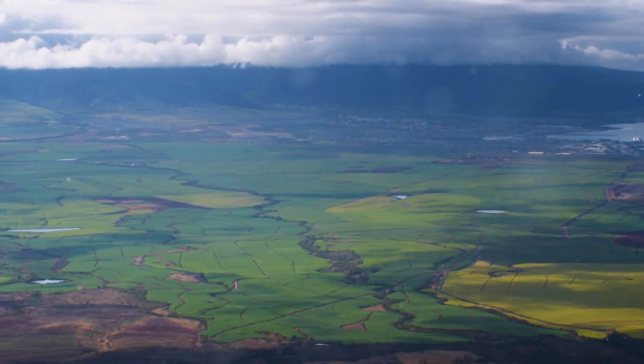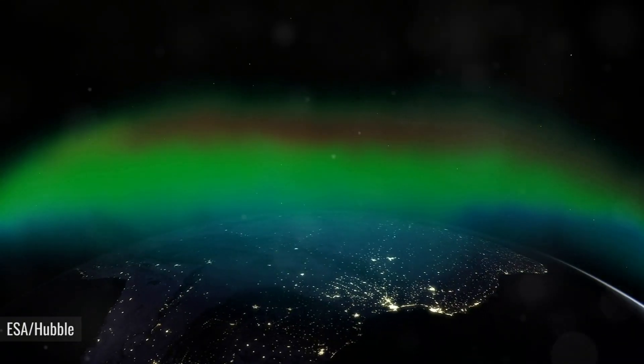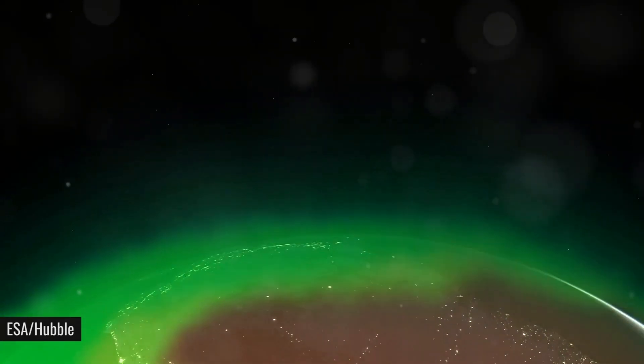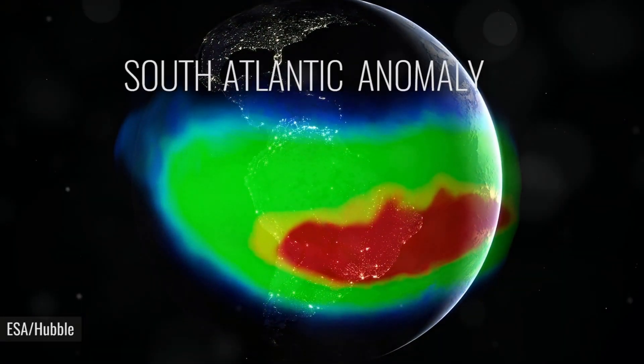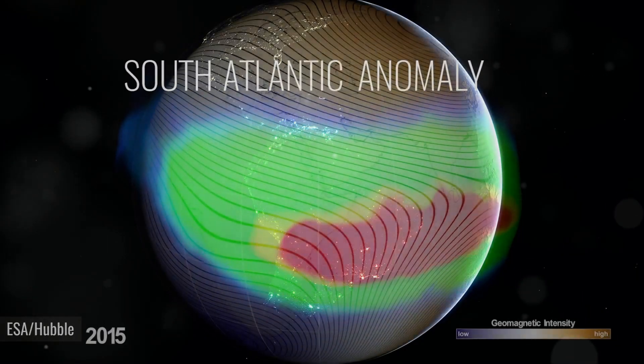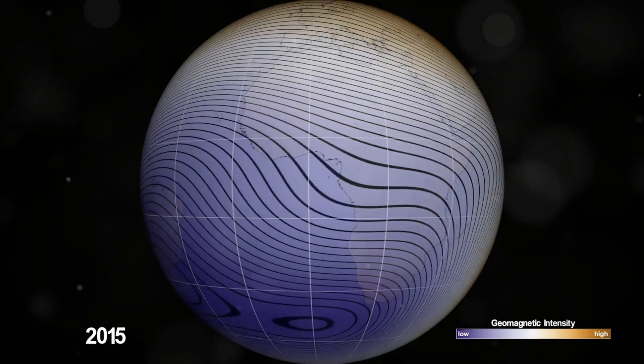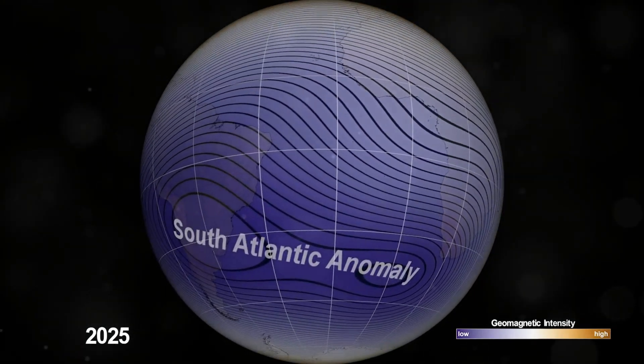There's a strange dent in Earth's magnetic field, and it's causing serious problems for satellites and spacecraft. This weak spot, called the South Atlantic Anomaly, or SAA, has long been a point of intrigue and concern for scientists, particularly those at NASA.